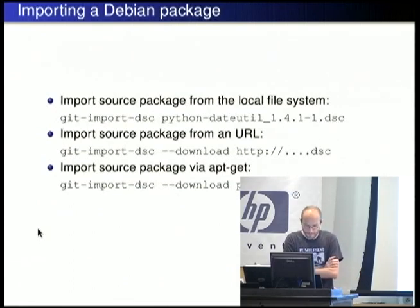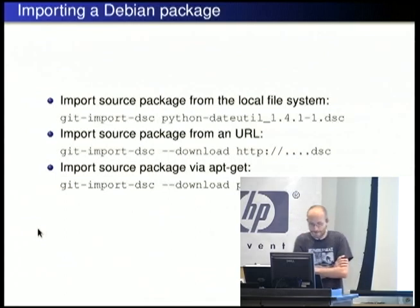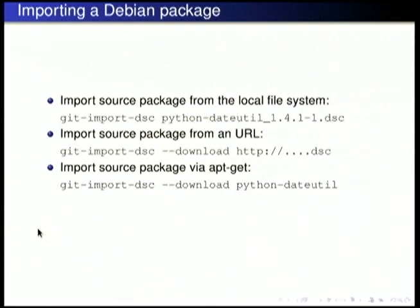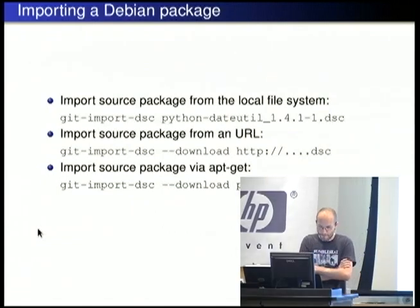To start, the tool `git import-dsc` can take a local DSC file and import the upstream version and Debian diff into the version control system. You can also give it a URL with a `--download` option, making it easy to fetch a source package from mentors or another Debian derivative. Or you can just give it a package name and it will use `apt-get` to download the package via the sources entry in your sources list.